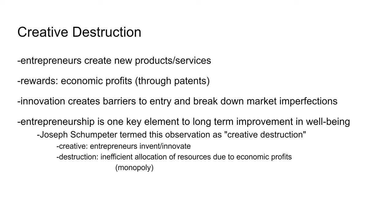Creative destruction: entrepreneurs will seek to invent or innovate products to enter the market and avoid barriers to entry. Entrepreneurs are motivated by the potential rewards of economic profits, which they gain through patents from their innovations or inventions. This concept was coined by Joseph Schumpeter. The 'creative' part is that entrepreneurs innovate and invent new products to add to the economy. The 'destructive' part is the inefficient allocation of goods — because as in the case of monopolies, having a patent allows them to create a monopoly and sell at a price higher than efficient.